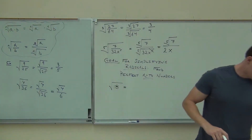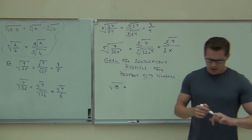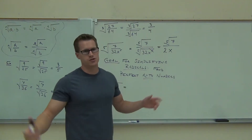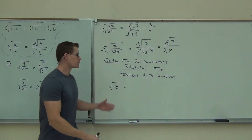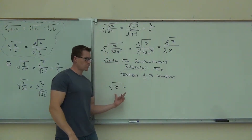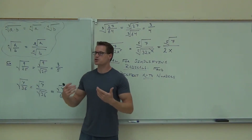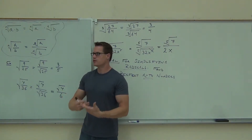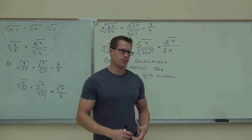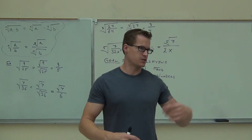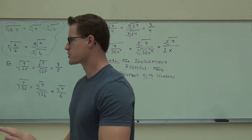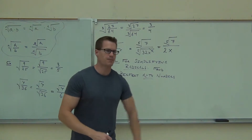What type of root do we have here? Square root. If we have a square root, here's our goal: we're going to be looking for perfect nth numbers. So if I have a square root, I'm going to be looking for perfect square numbers. Here's how you think of this — you've done this before. This should be a little bit of review. You just haven't dealt with the variable portion, which I'm going to add on in just a bit.